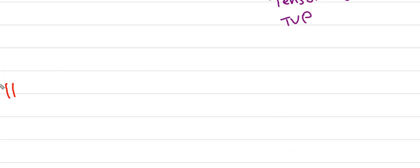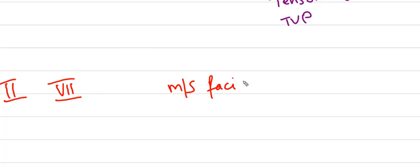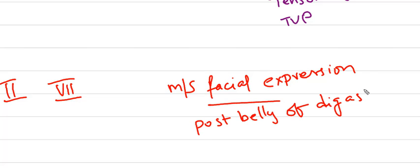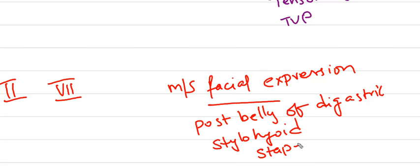Coming to the second pharyngeal arch: the seventh facial nerve is derived from this pharyngeal arch. Muscles of facial expression like the posterior belly of digastric, stylohyoid, and stapedius are derived from this pharyngeal arch.